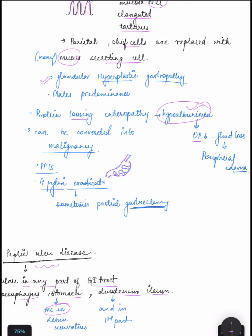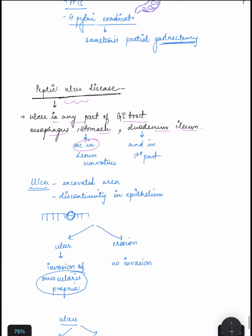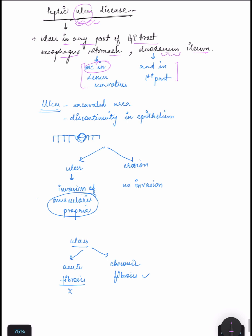Now we are going to study peptic ulcer disease. As the name suggests, ulcer in any part of the GI tract like esophagus, stomach, duodenum, or ileum. Most common in lesser curvature and in the duodenum in the first part. Ulcer is an excavated area and discontinuity in epithelium.